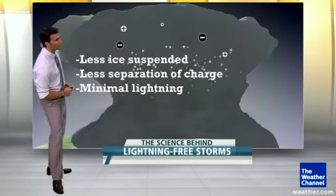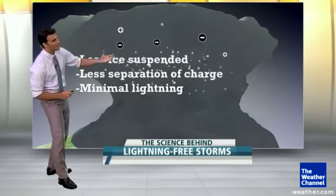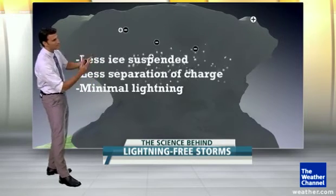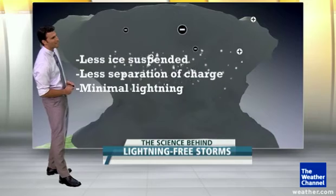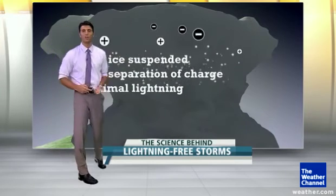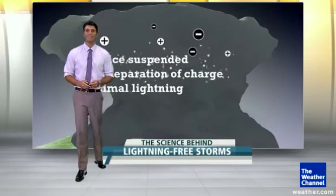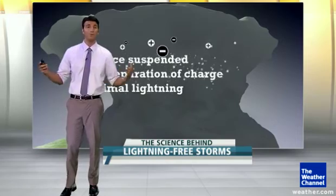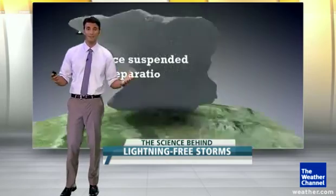When you have that weak updraft, you have less ice suspended, fewer ice particles banging together, and you don't get as much separation of charge. That leads to minimal lightning. If the charge is already balanced out, you don't need lightning to balance things out.